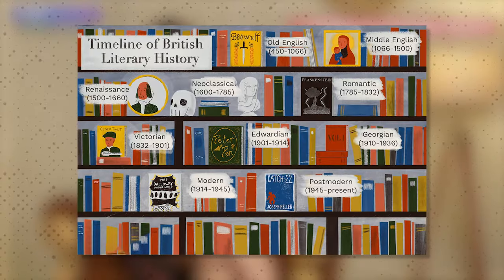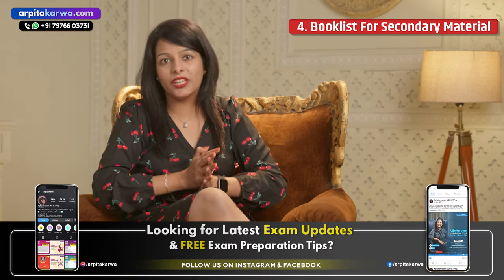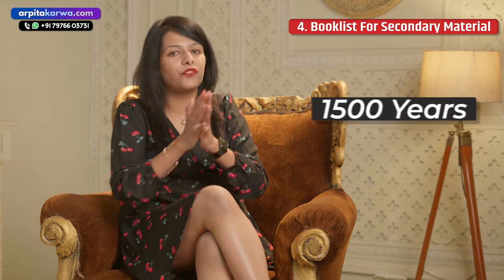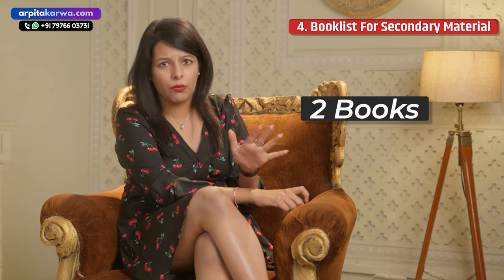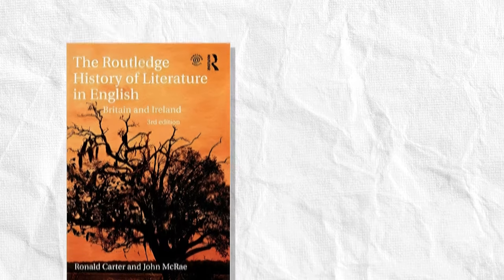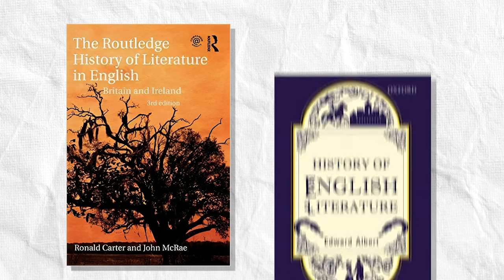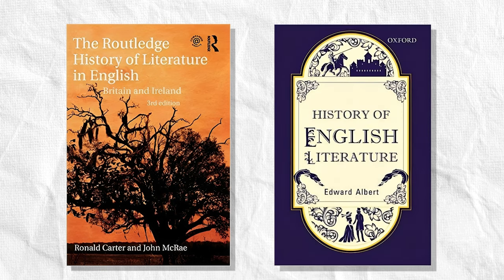Moving on to the book list for secondary material. The first important thing is the history of English literature. In order to understand all these texts, you have to have a proper understanding of how literature has transformed over the last 1,500 years. For that, I would recommend two books — you can purchase either one: the Routledge History of English Literature, or Edward Albert's History of English Literature. Reading either of these will give you a proper understanding of the history of English literature.